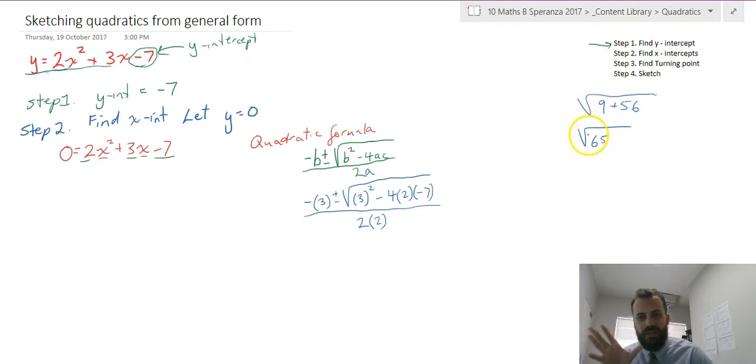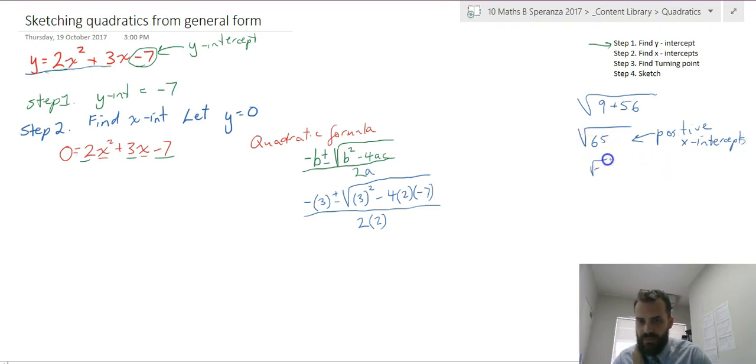The reason I've done that is because this bit underneath the square root is called your determinant. Now if it's positive, which this one is, that means that there's going to be x-intercepts. If it was negative, that means there's no x-intercepts.